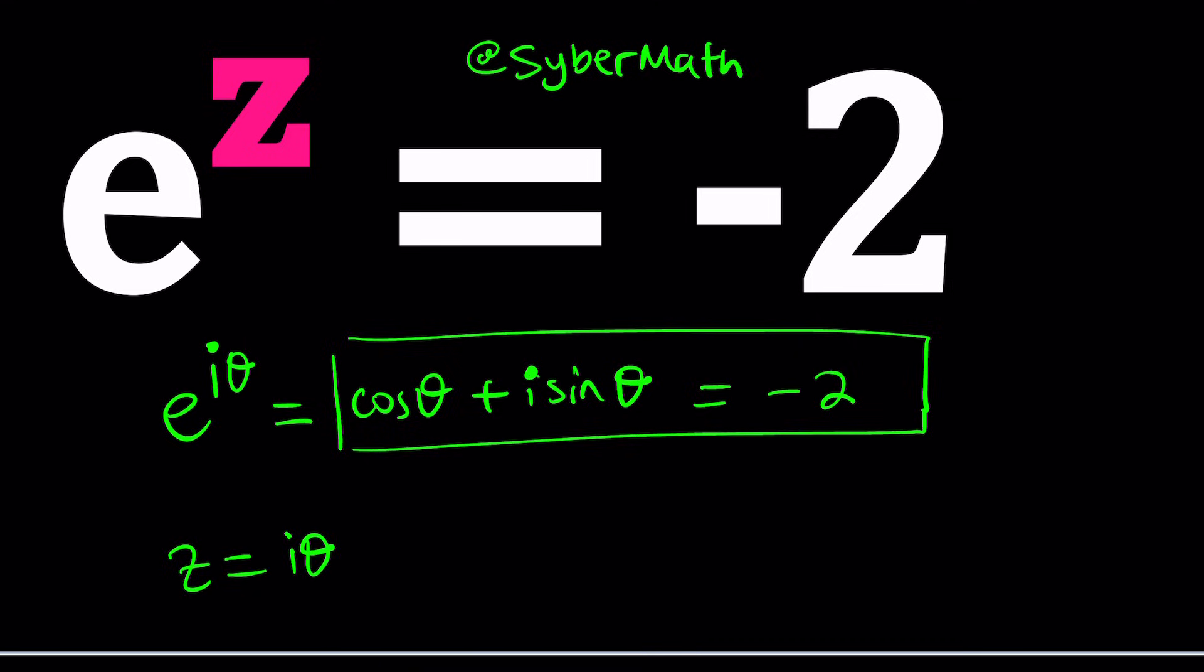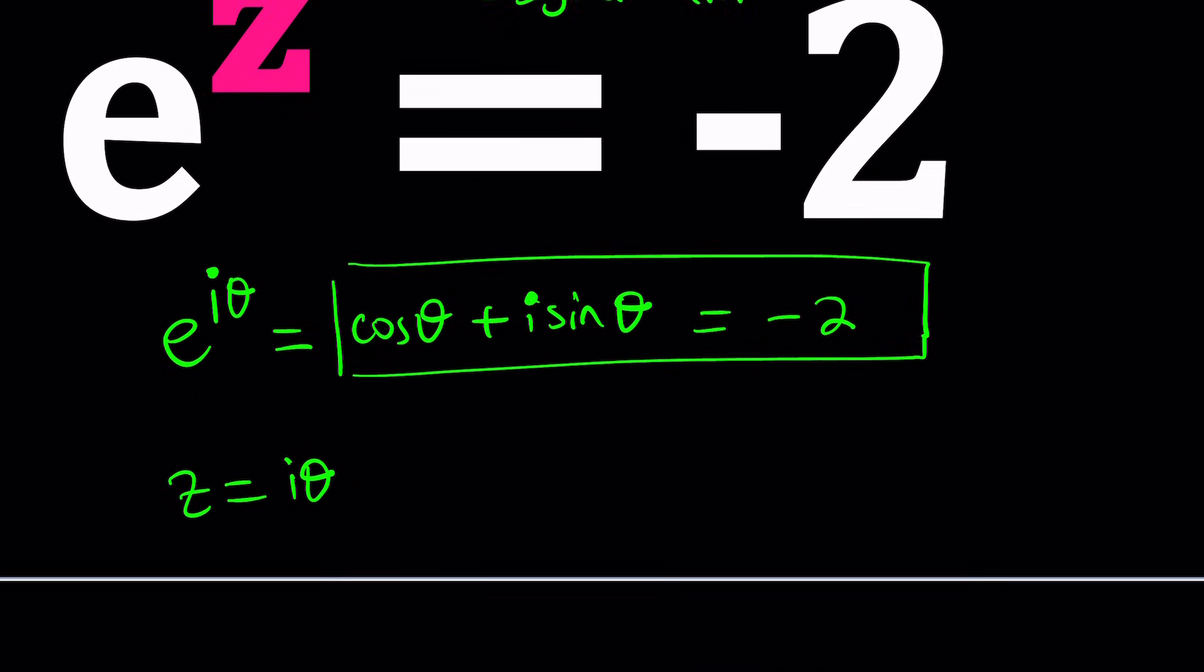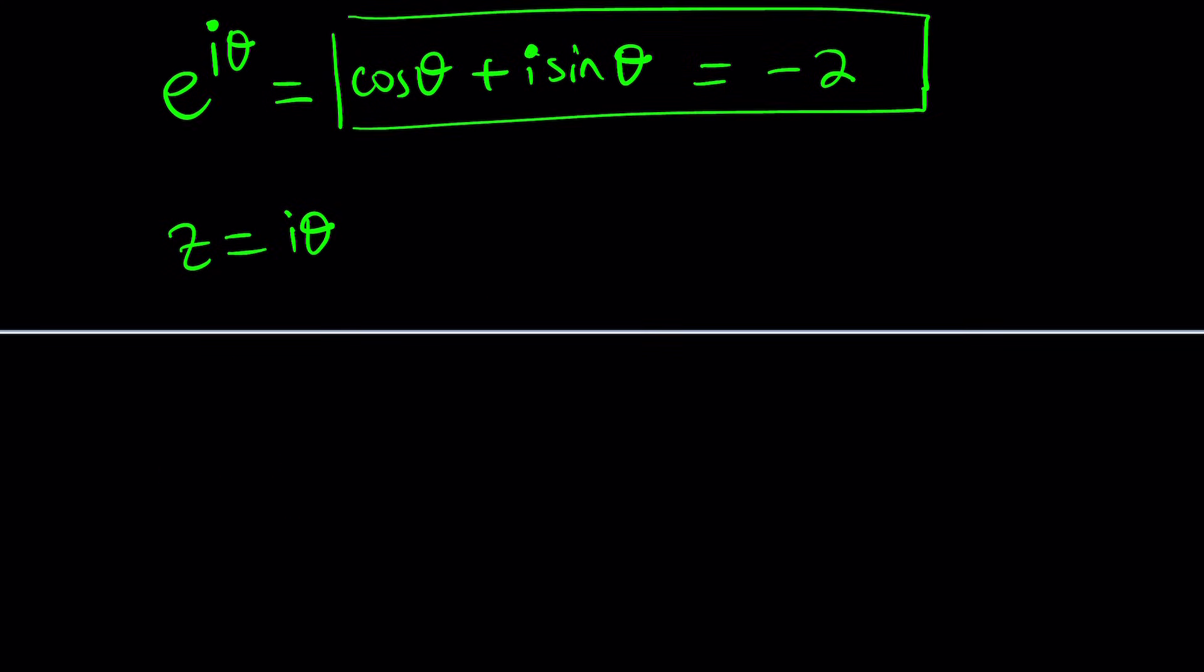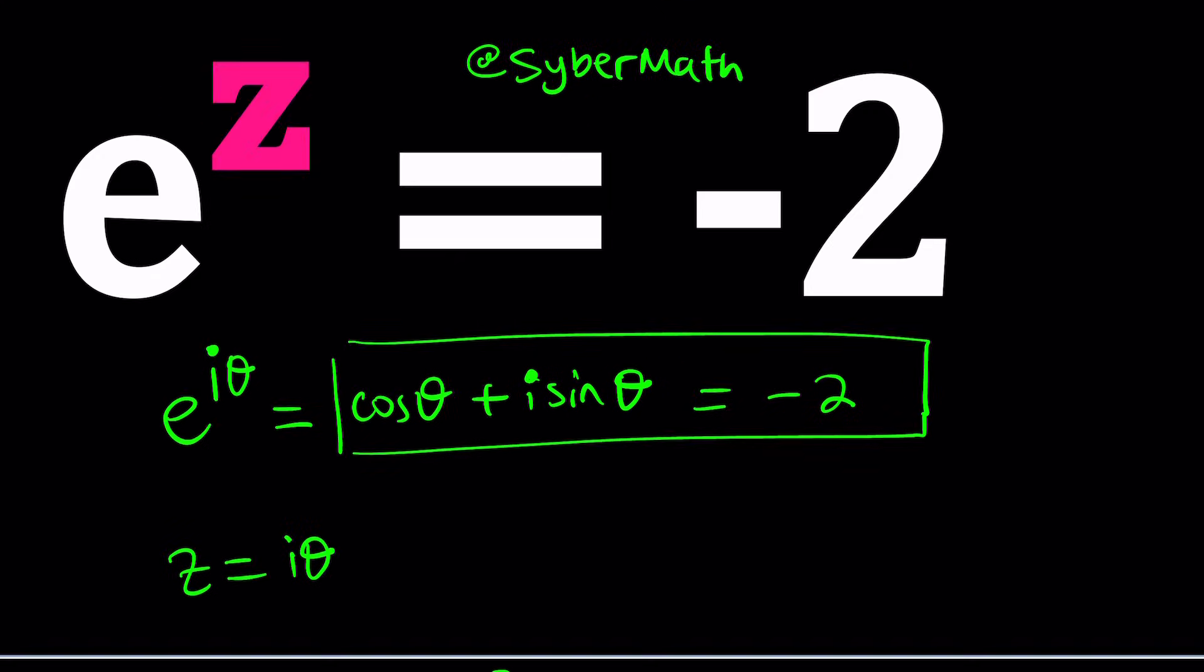And of course, it depends on theta. But anyways, we're going to do this a little bit more systematically, a little differently, but I just wanted to throw it out there so you can kind of think about it. So we have a power of e on the left-hand side. Think about the modulus of a number like that. Is it going to be a power of e or is it just going to be e? You can think about the absolute value of e to the z. A lot of questions.